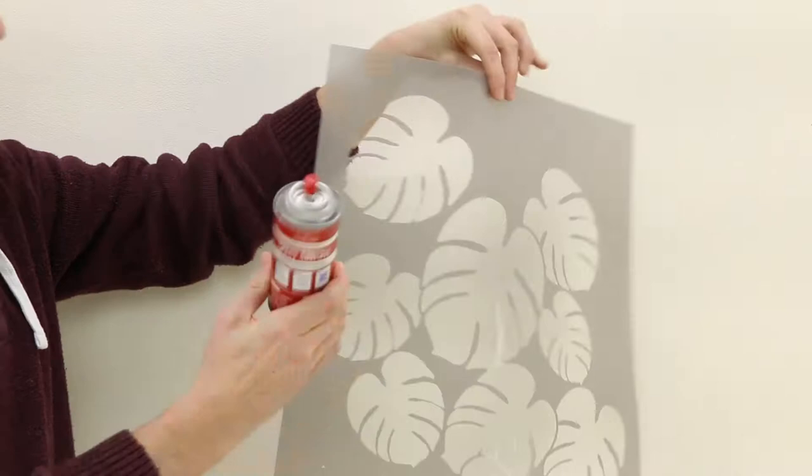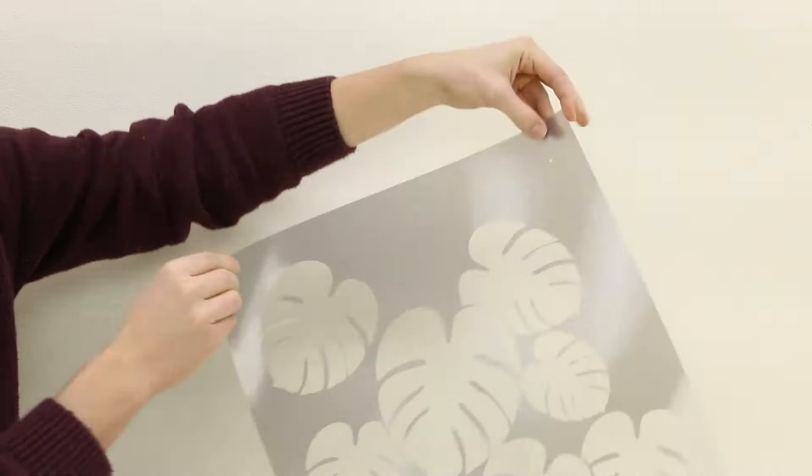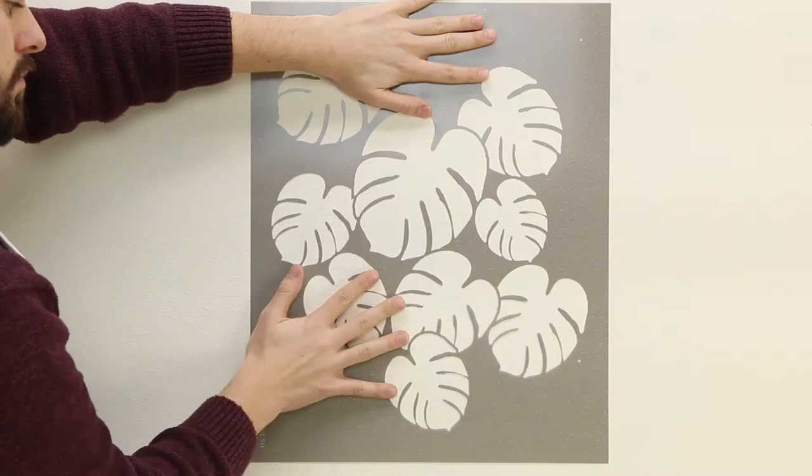Use repositionable spray adhesive on the back of the stencil to hold it in place and prevent paint bleed. Wait 30 seconds before pressing the stencil flat against the wall.